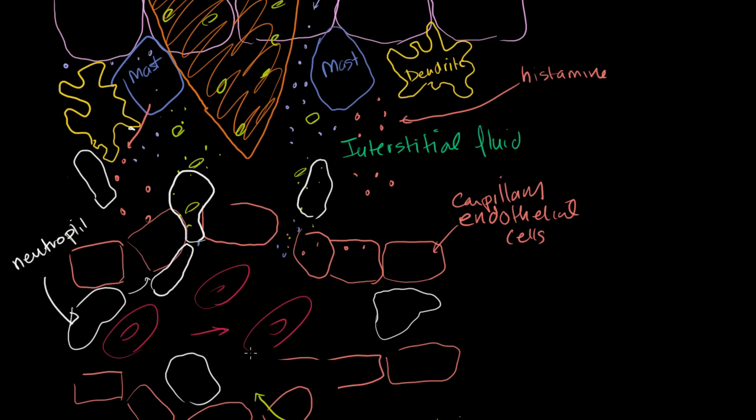You'll also have B cells and T cells, they'll also make their way. They'll also experience marginization where they roll up against the sides of the capillary, and then diapodesis or extravasation where they go through, and then they'll be activated, and they can actually do the specific immune system.